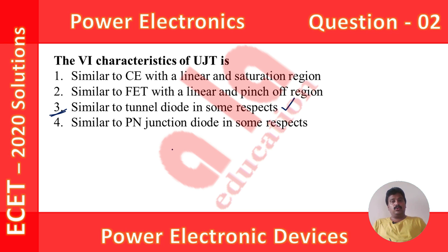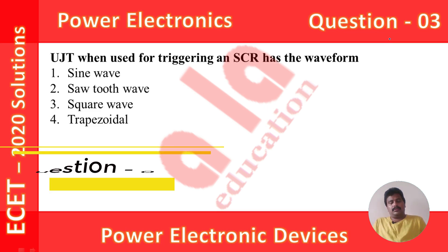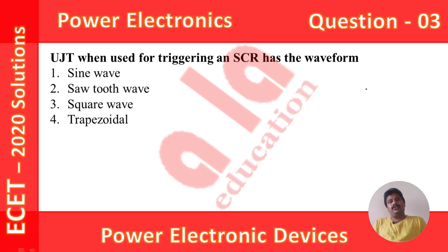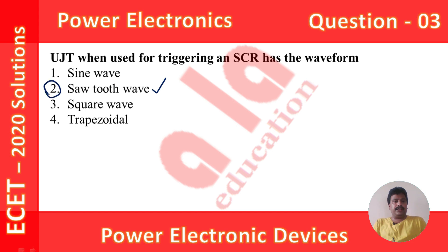Now let us move to question number 3. The question is: UJT when used for triggering an SCR has the waveform of? Triggering means bringing the SCR from off state to on state. In general, the output voltage of the UJT triggering circuit is a sawtooth waveform. So the answer is sawtooth waveform, and option 2 is the correct option.